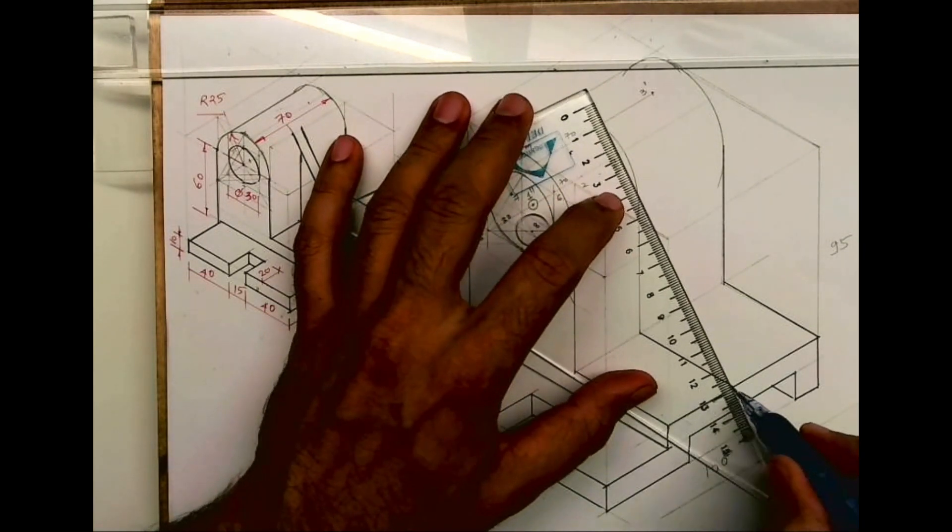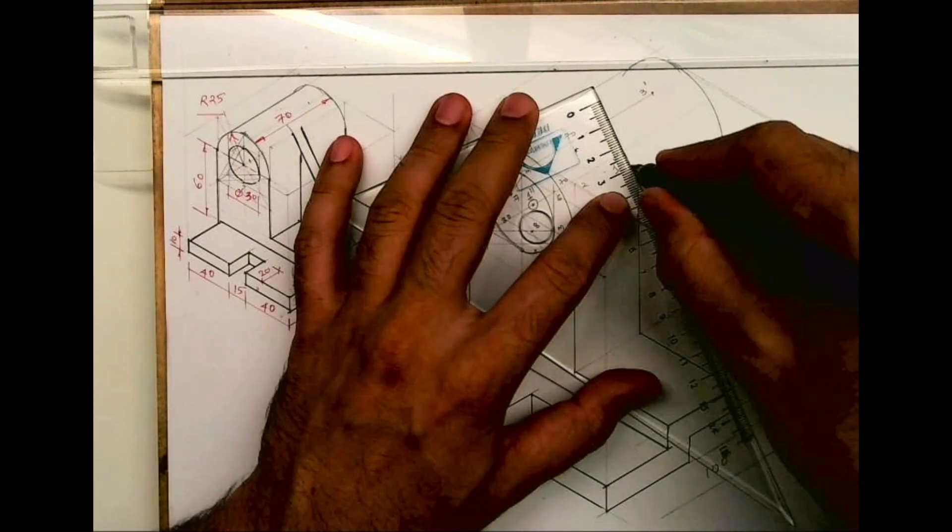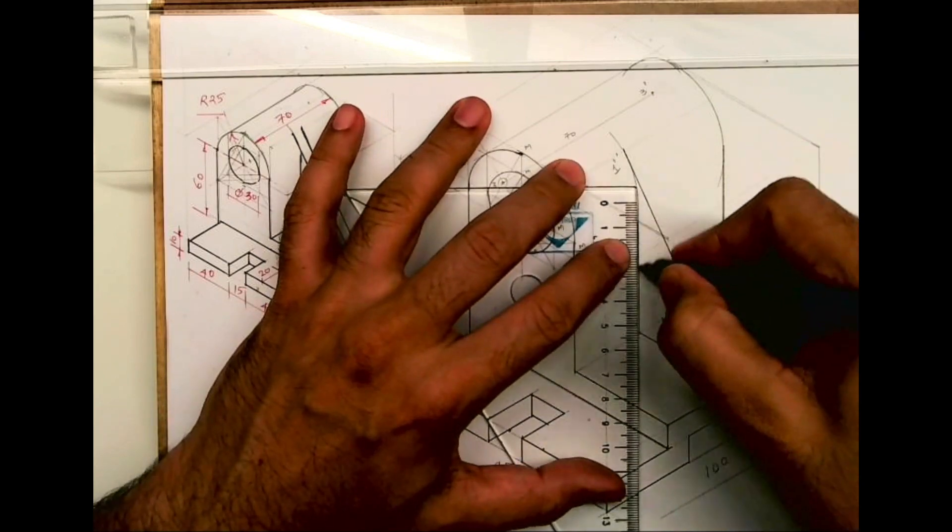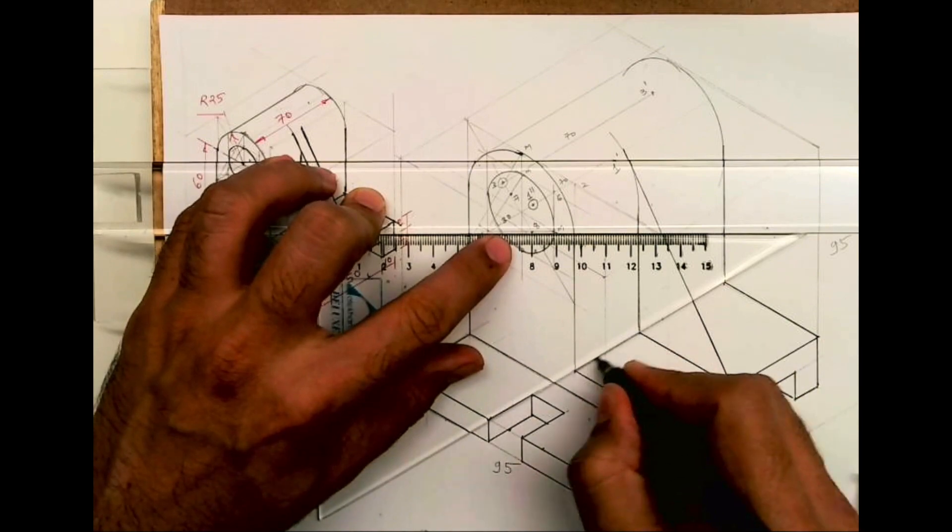After drawing that arc, from bottom you draw this line that will be tangent. So this is how you should draw a rib. Always go with the curved part first and then you draw tangent.